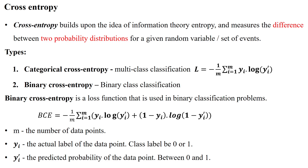Here we will discuss the cross entropy, which is the loss function useful for classification problem statements. Cross entropy builds upon the idea of information theory entropy, measuring the difference between two probability distributions of a given random variable or set of events. It has different types for binary class classification and multi-class classification. The first one is categorical cross entropy, which is useful for multi-class classification problem statements.